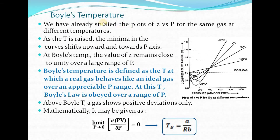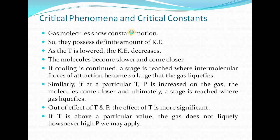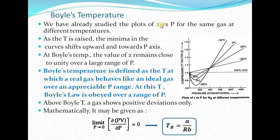Now the next concept is Boyle's temperature. We have already studied the plots of compressibility factor Z versus pressure for a particular gas at different temperatures. This plot is similar to the plot of PV versus P at different temperatures. As the temperature is raised, the minima in the curve shift upward and towards the pressure axis — the minima moves upward as well as to the left side, towards the P equals zero axis.